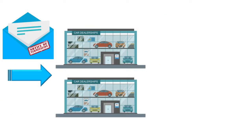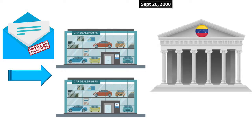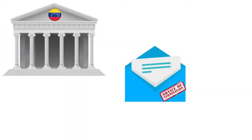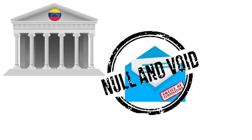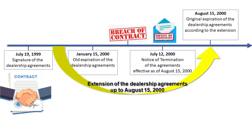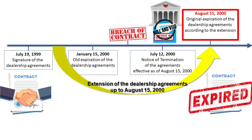Upon receiving the notice, the two car dealerships filed with Venezuelan courts a claim for constitutional protection to rescind the effects of the notice of termination of their agreements. On October 25, 2000, the court declared null and void the two notices of termination, thus reinstating the original dealership agreements, which anyway were due to expire on August 15, 2000. Since the court decision limited itself to declaring the invalidity of the two notices of termination without amending or further extending the duration of the dealership agreements, such agreements were terminated by their original expiration date of August 15, 2000.